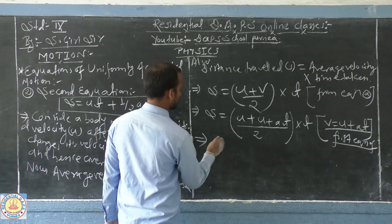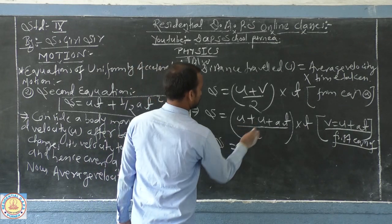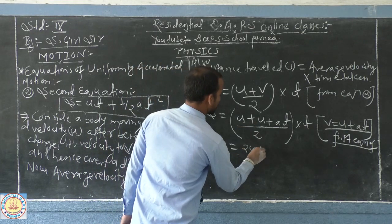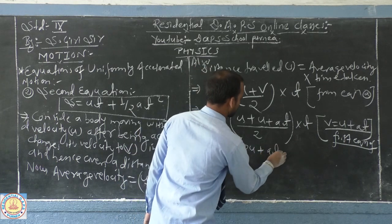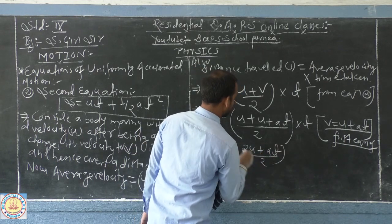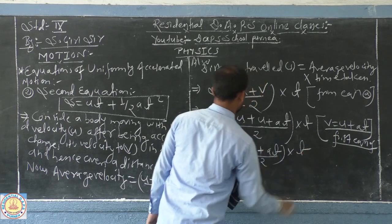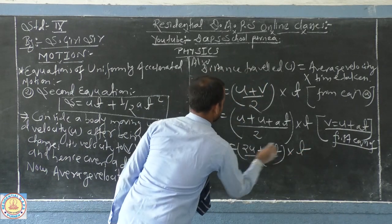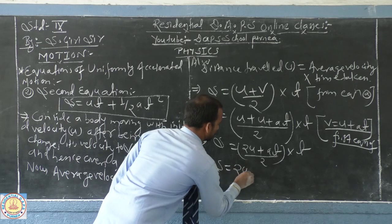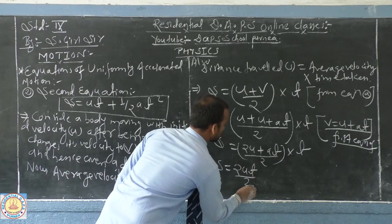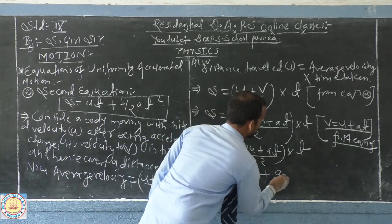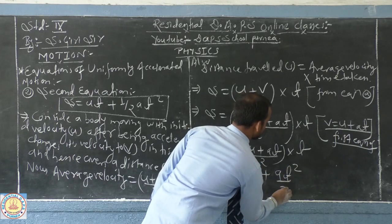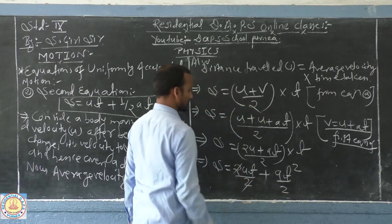Now, you just solve from here: twice u plus a t by 2 into t. S equal to twice u, separate it out, a t square by 2. 2 cancels out.